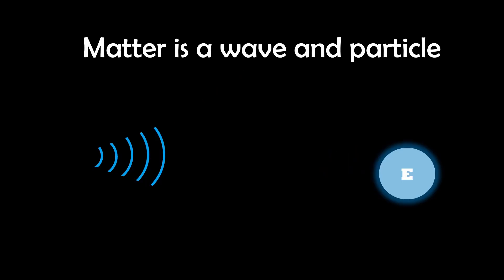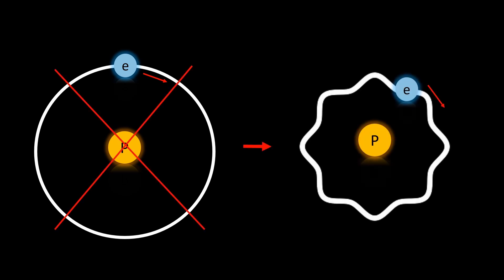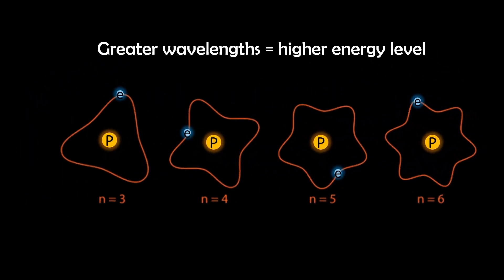We also saw matter itself, including electrons, exhibit wave particle duality. So instead of electrons simply orbiting the nucleus in a circular fashion, they orbit in this standing wave pattern and with greater wavelengths come higher energy levels.